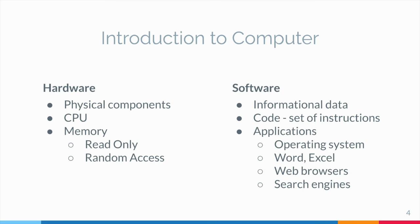Software is made up of informational data and code that acts as a set of instructions informing the hardware what actions it is to perform or initiate. For example, software applications include the computer's operating system, Microsoft Word for word processing, and Excel for spreadsheets and data calculation.